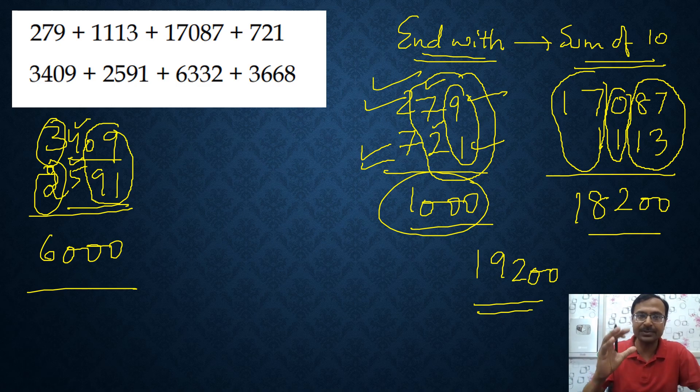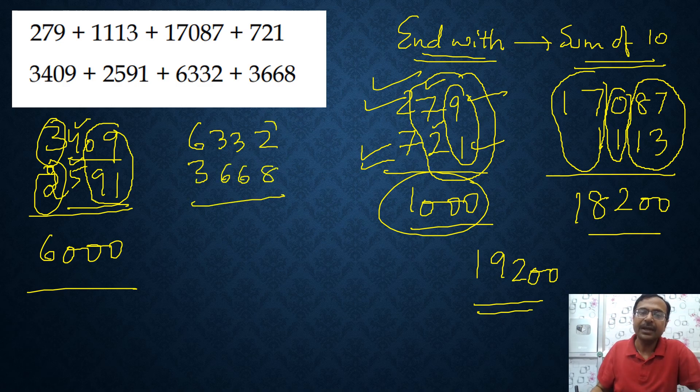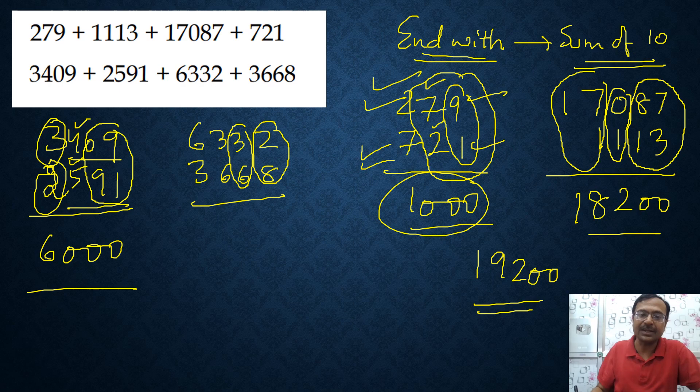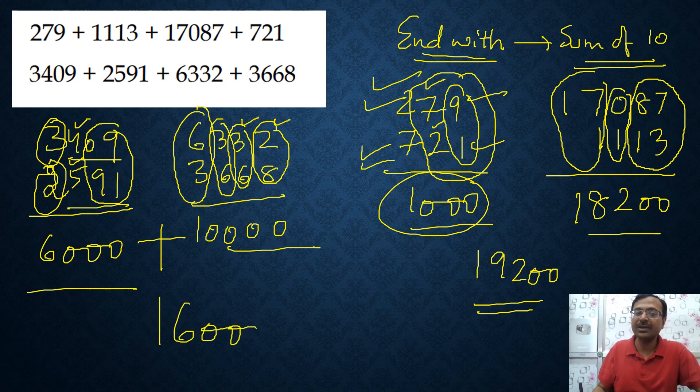This is how you need to think about the numbers. I am writing everything there just to tell you how you have to think about the numbers, but when you are trained in it you don't have to write anything, you will tell me the answer directly. Likewise 6332 and 3668, you can see here 8 plus 2 is 10 and 6 plus 3 is 9, so 9 tens and 1 ten is 100, and 6 plus 3 is 9, so 900 plus 100 is 10,000. Therefore the sum of these two numbers is 16,000 which becomes the sum of all the four numbers given there.